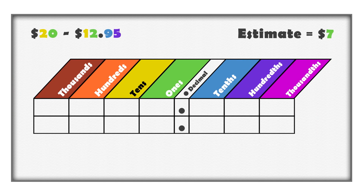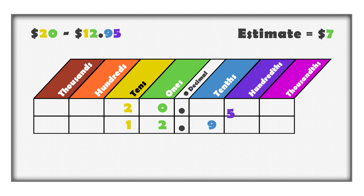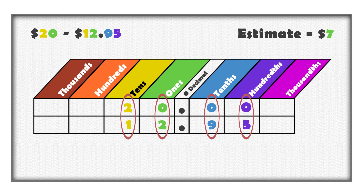We can also use a place value chart to help organize the digits when subtracting decimal numbers. Fill the digits into the chart. 20 dollars has 2 tens and 0 ones. 12 dollars and 95 cents has 1 ten, 2 ones, 9 tenths, and 5 hundredths. When we subtract decimal values, we subtract digits with the same place value. It is helpful to put zeros in the table to fill the columns.